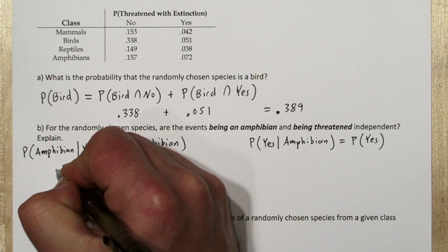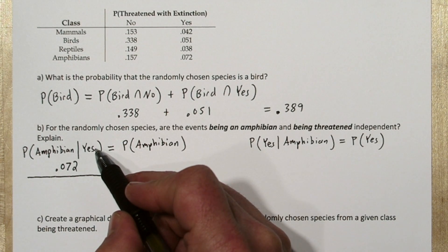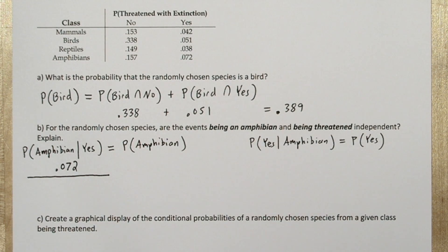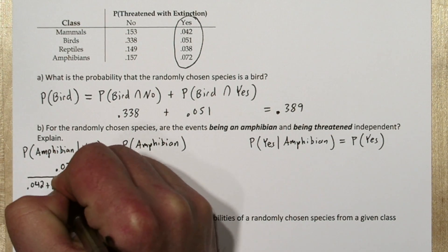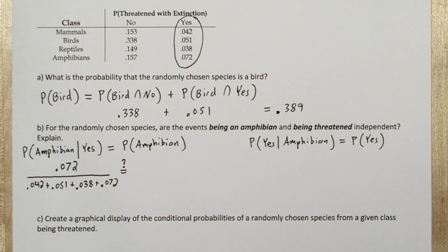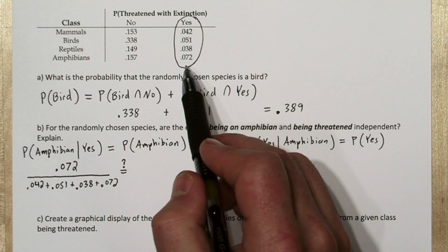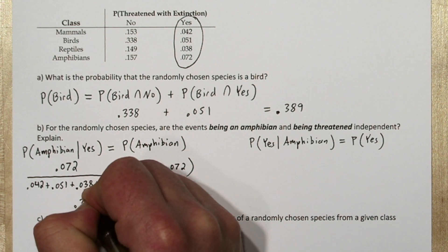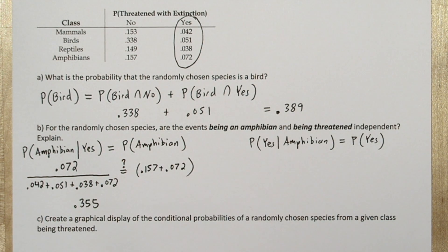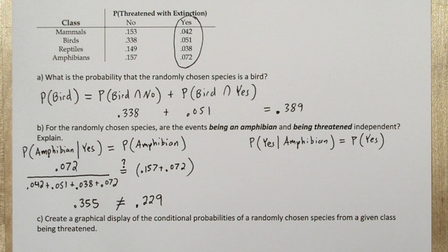The probability of being a threatened amphibian is 0.072. We need to divide that by all the probability associated with being threatened with extinction — the sum of the entire column. And the probability of being an amphibian is the sum of being an amphibian not threatened and being an amphibian that is threatened. So the probability of being an amphibian given you're a threatened species is about 0.355, and that does not equal our total probability of being an amphibian, 0.229.